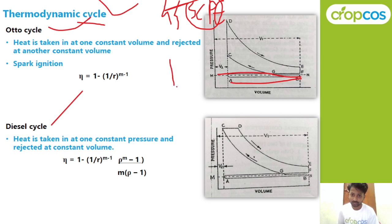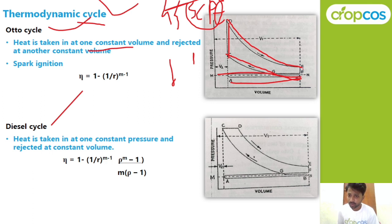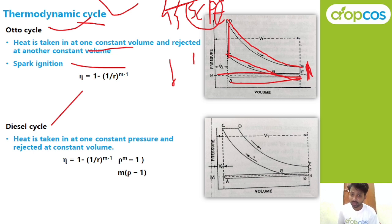In the first stroke, suction occurs. In the second stroke, point B to C represents compression. At point C, the spark plug ignites the air-fuel mixture, so point C to D is the ignition. In the graph, this is a straight vertical line representing constant volume — volume is constant from C to D. In the third stroke, point D to E, the piston moves down — the power stroke. Point E to F is a straight line representing heat rejection at constant volume. This is the complete Otto cycle.